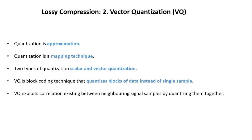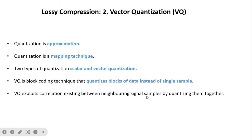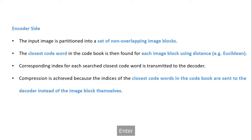Now we will see vector quantization. Quantization is approximation — it is a mapping technique. There are two types of quantization: scalar and vector quantization. Vector quantization is a block encoding technique that quantizes a block of data instead of a single sample. When we take a block of data it becomes a vector; a single sample becomes scalar. It exploits the correlation between neighboring samples by quantizing them together.